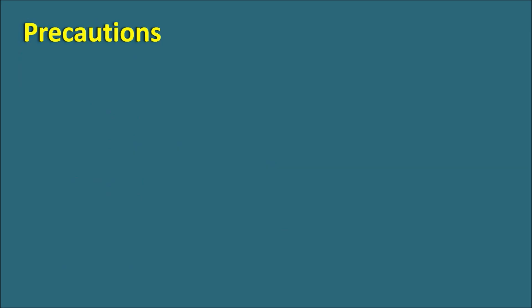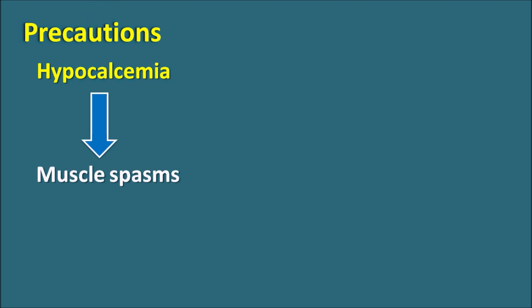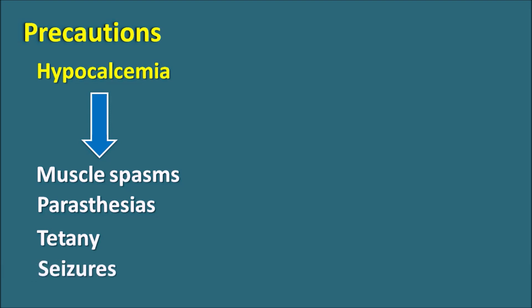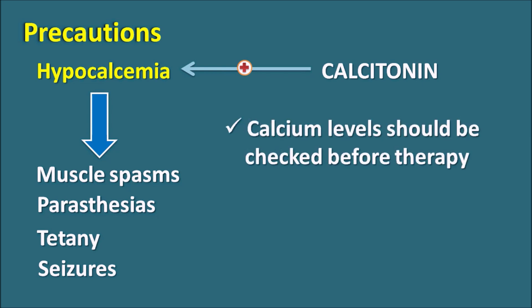What are the precautions? One important precaution with calcitonin is hypocalcemia. Calcitonin can control calcium levels within the plasma and can induce hypocalcemia. When hypocalcemia is observed in patients, it can result in symptoms like muscle spasms, paresthesias, loss of sensation, tetany, lack of muscle contraction, and even seizures. So if any patient already has hypocalcemia, calcitonin can further worsen it, elevating these symptoms. Therefore, calcium levels should be checked before starting calcitonin therapy.